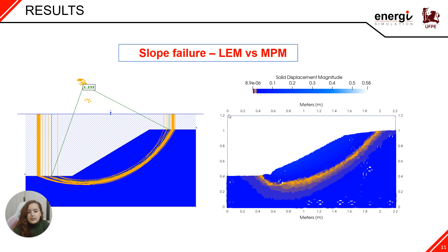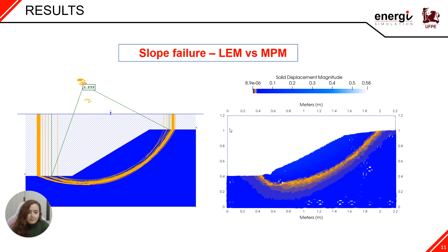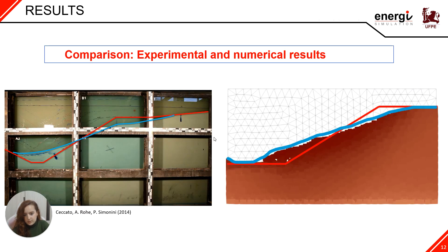Here we can see a comparison between the slope failure utilizing the limit equilibrium method and the material point method. For MPM, the solid displacement is used to show the development of the slip surface, while in the limit equilibrium method, the circular surface is automatically generated and the factor of safety is obtained. As we can observe, the shape of the slip surface is consistent between the two models. Comparing the numerical results with the experimental results from the published paper, it is observed that the numerical results of the deformed slope in the final equilibrium state are in good agreement with experimental data. This analysis showcased the capability of the MPM in accurately modelling submarine landslides.